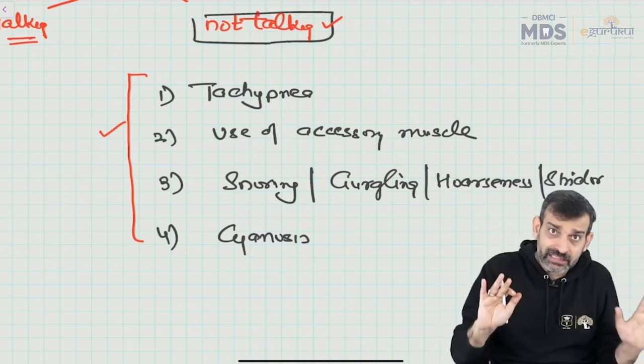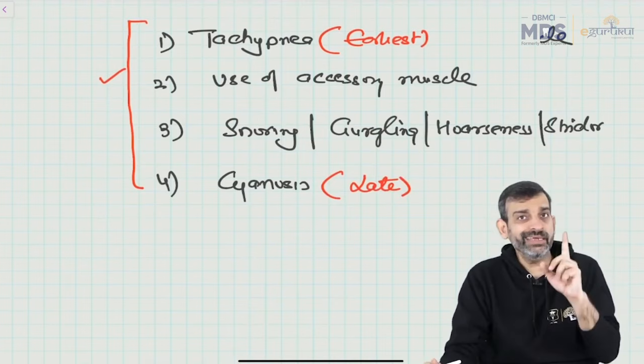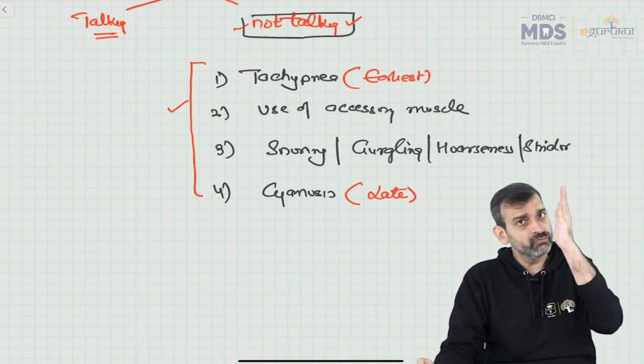This is an important distinction also checked in exams: what is the earliest sign of airway problem, and what is the late sign of airway problem? So we need to know both. If the patient is not talking and any of those signs are present, we know there is an airway problem and we cannot proceed to B.